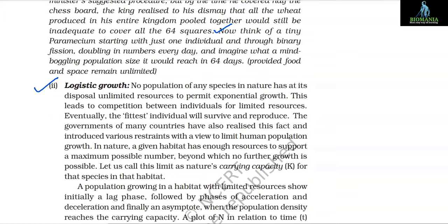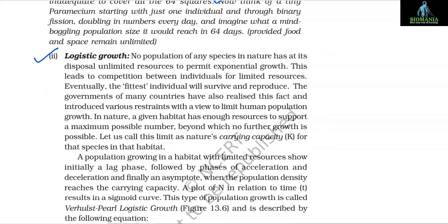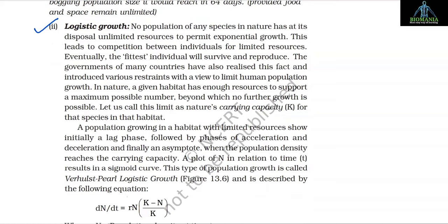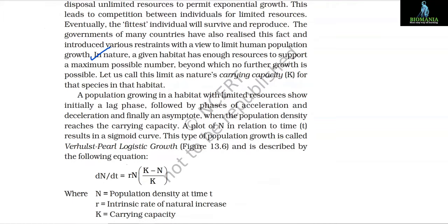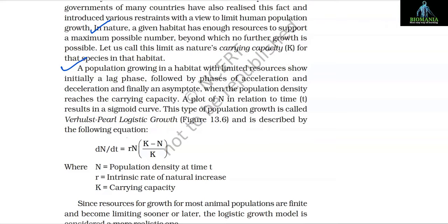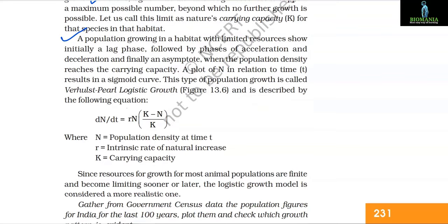The second growth model is logistic growth. No population of any species in nature has unlimited resources to permit exponential growth. This leads to competition between individuals for limited resources, and eventually the fittest individuals will survive and reproduce. In nature, a given habitat has enough resources to support a maximum possible number, beyond which no further growth is possible — this limit is called the carrying capacity K for that species in that habitat. A population growing in a habitat with limited resources shows initially a lag phase, followed by phases of acceleration and deceleration, and finally an asymptote when population density reaches the carrying capacity, resulting in a sigmoid curve.